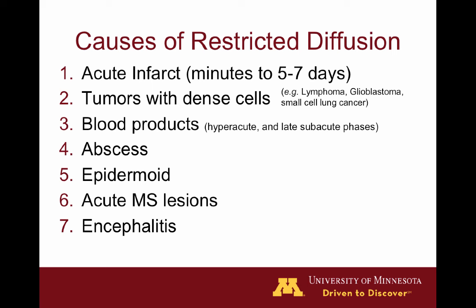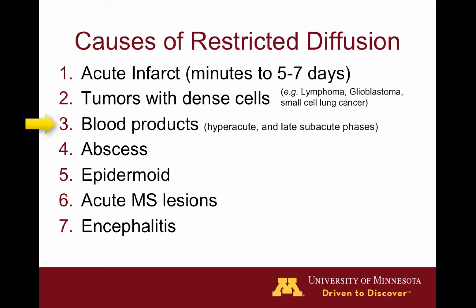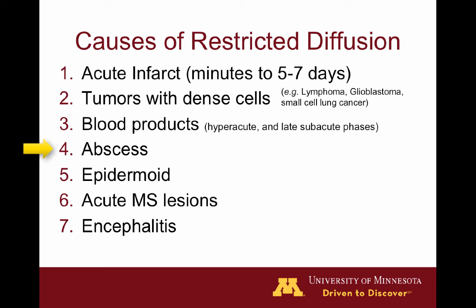The common causes of restricted diffusion include: acute infarct, where DWI turns positive within minutes with low signal on ADC lasting at least five days before drifting upward; tumors with densely packed cells and high nucleus-to-cytoplasm ratios, including small round blue cell tumors; certain phases of blood products, especially the hyperacute and late subacute phases; certain abscesses, especially pyogenic bacterial abscesses but occasionally fungal and other atypical organisms; epidermoid tumors including the cholesteatoma; acute demyelinating lesions such as those from multiple sclerosis; and cortical restricted diffusion in encephalitis.